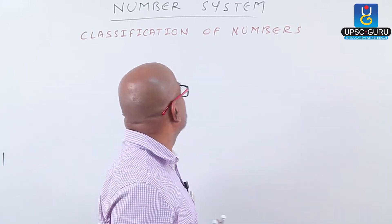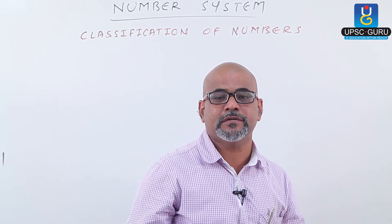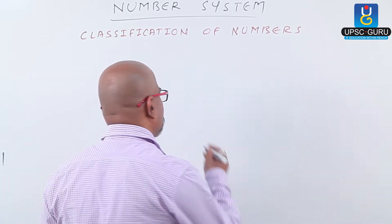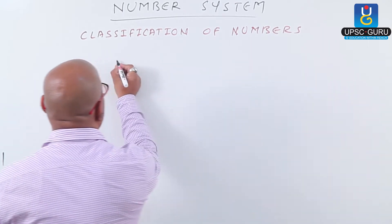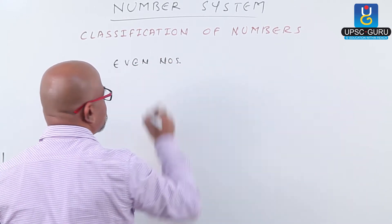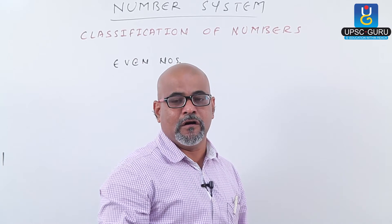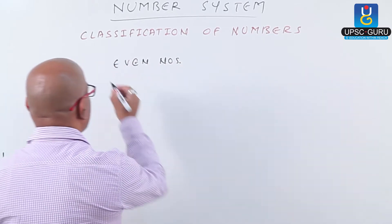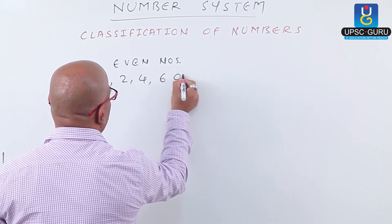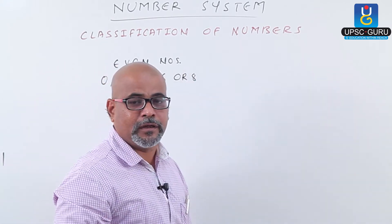Now in this next part of lecture, we will see some more classification of numbers. First we see which are the even numbers and odd numbers. Even numbers are the numbers in which the last digit, or digit in the unit place, is 0, 2, 4, 6, or 8. Those numbers are called even numbers.